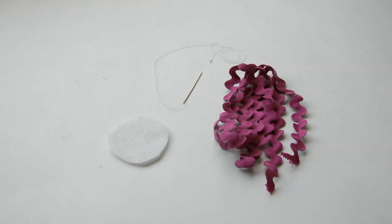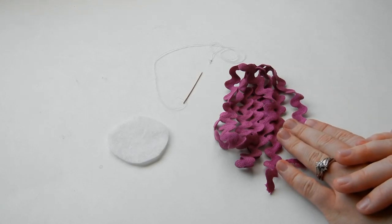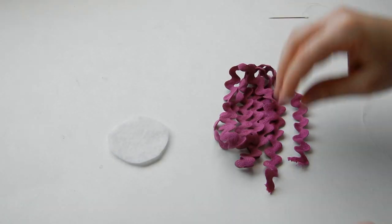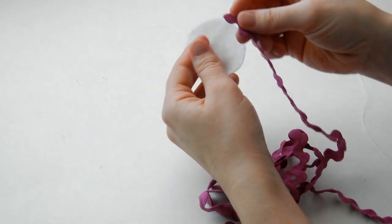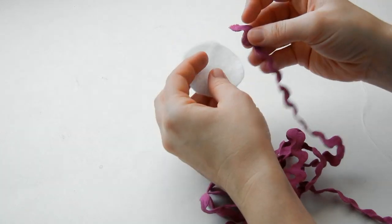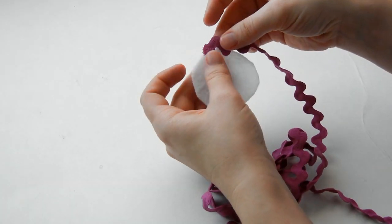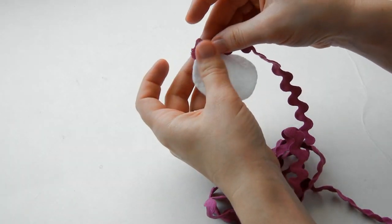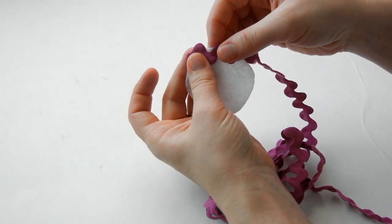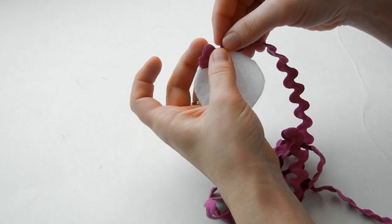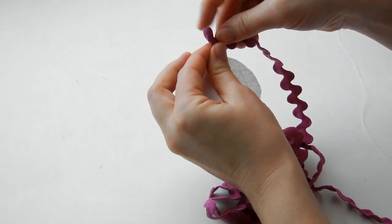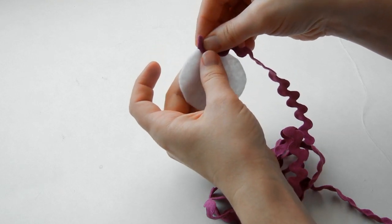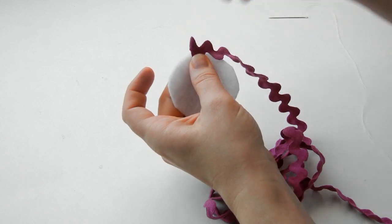So what we're going to do first is we're going to stitch the rickrack around the felt circle. So have your needle and thread ready. And then we're going to take the end of our rickrack and our felt circle. We're going to be stitching the bottom of the rickrack around the felt circle. You're going to want to make sure that the felt isn't peeking through. So when you line it up, just make sure that it's not on the very edge, but far enough down so you won't see that felt.